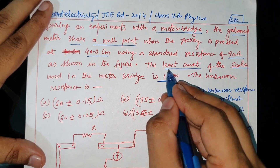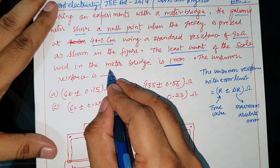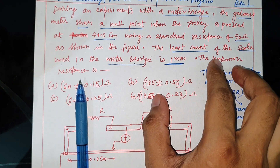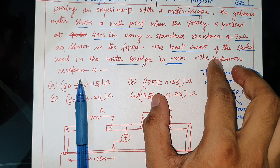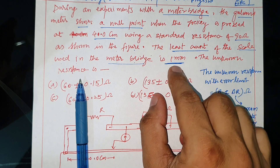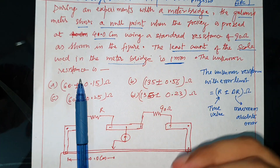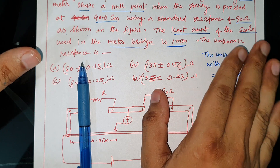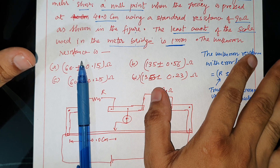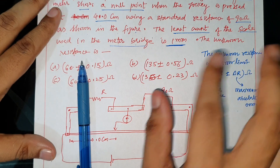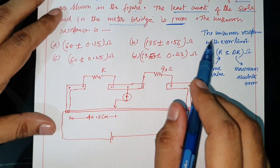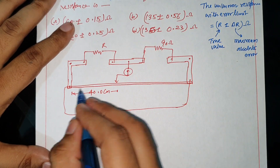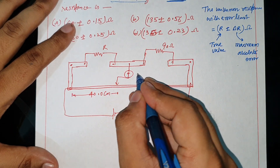The least count of the scale used in the meter bridge is 1 mm. The least count of the instrument is the minimum accurate value. When we consider the maximum error in any instrument, the least count equals the maximum error. So in this case, the maximum error will be 1 mm, which is 0.1 cm.